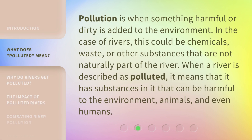Pollution is when something harmful or dirty is added to the environment. In the case of rivers, this could be chemicals, waste, or other substances that are not naturally part of the river. When a river is described as polluted, it means that it has substances in it that can be harmful to the environment, animals, and even humans.